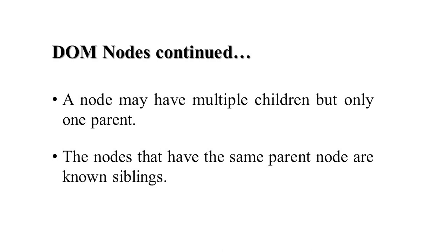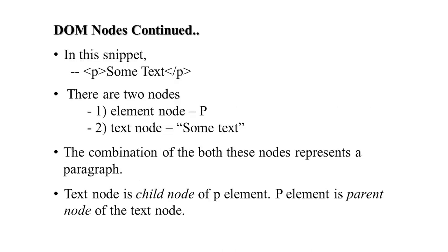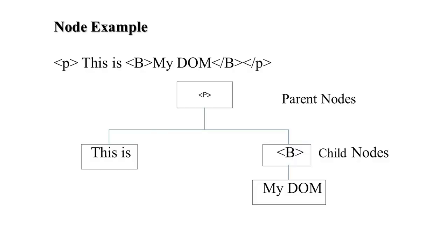Every element in the HTML page represents a DOM node, and elements are related as parent-child relationships. A node may have multiple children but only one parent. Nodes sharing the same parent are called siblings. For example, in a paragraph element like P with 'some text', the element node is P and the text node is 'some text'. The text node is a child node of P. If you have P containing B bold 'my DOM' B P, then parent is P and child nodes are 'this is', B, and 'my DOM'.